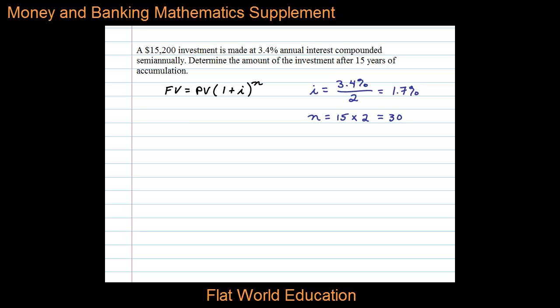Now we can use the future value formula by substituting $15,200 for the present value, times 1 plus the interest rate decimalized per period, which is 0.017, raised to the number of periods, in this case 30.